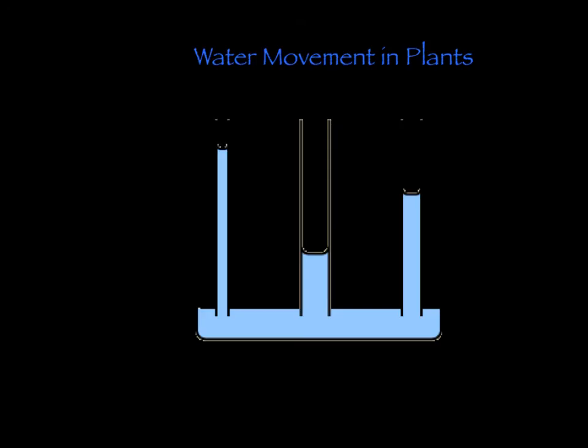Another property of water is adhesion. This is the attraction of water molecules to other molecules. Notice how the water molecules of this thinnest tube has the water highest up. That is because the water molecules have more of the tube molecules to be attracted to, and is able to travel further up the tube without any energy. This is great for plants because they can save energy and not waste it on pulling up the water molecules.